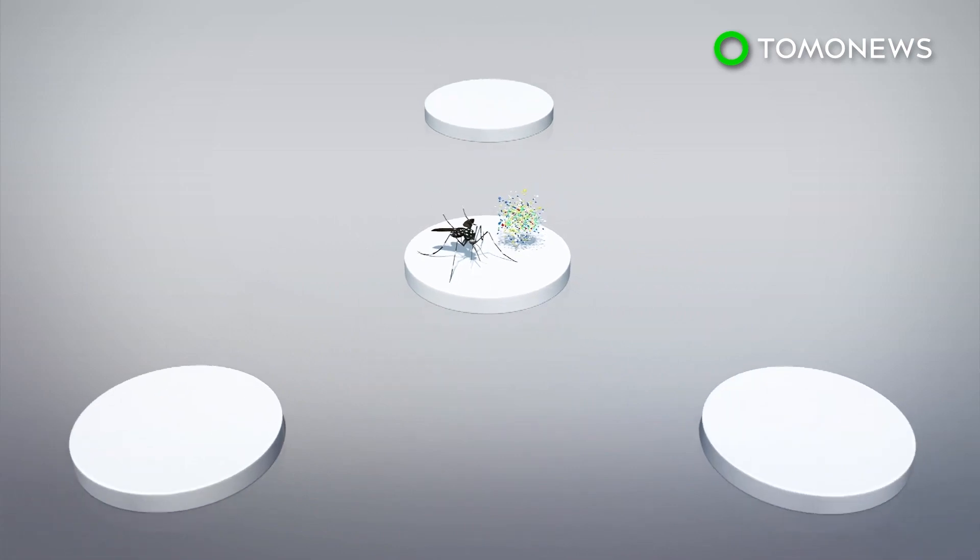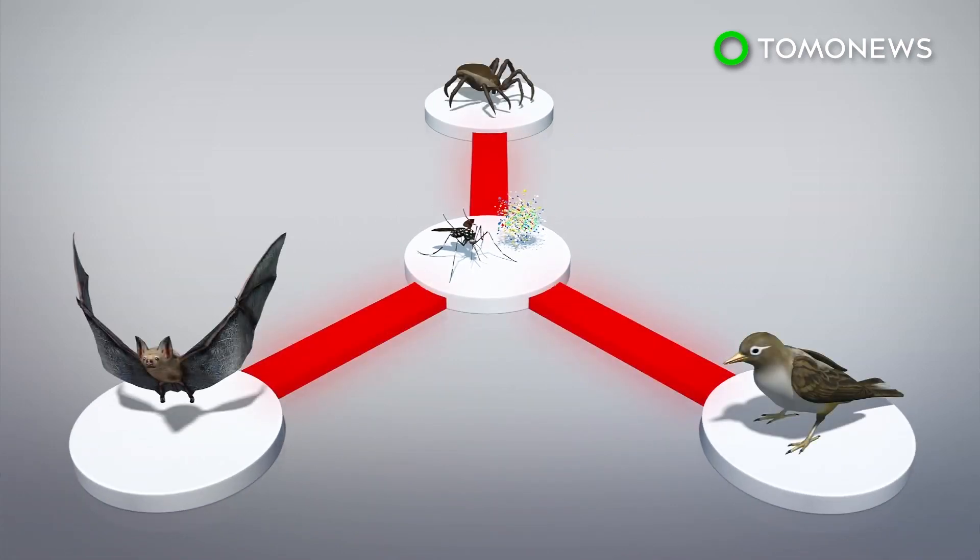This means that creatures that eat the mosquitoes, such as birds, bats and spiders, are also ingesting the plastics.